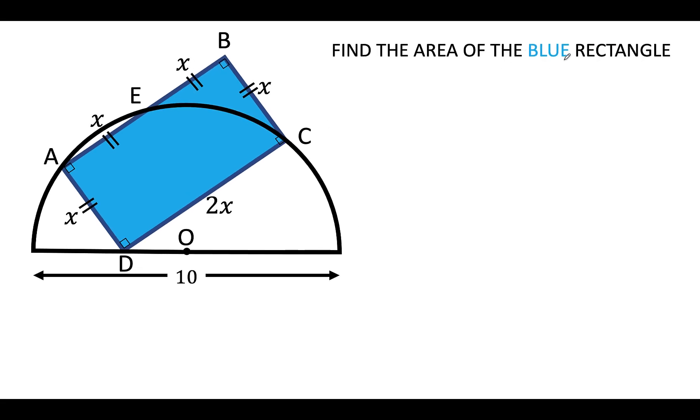Now since we would like to find the area of the blue rectangle with a length of 2x and a width of x, then area is equal to 2x times x or 2x². If we know the value of x², then this problem is already solved. We just have to multiply that value by 2 and we know the area of the blue rectangle. Now the problem is we do not know the value of x² and that is what we are going to find out in this problem.